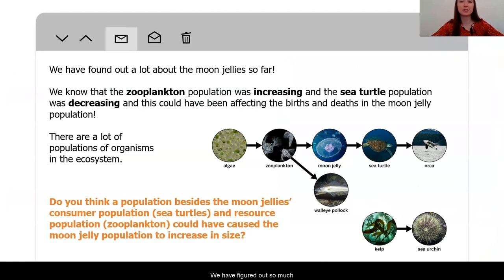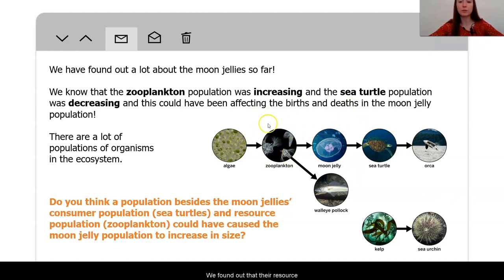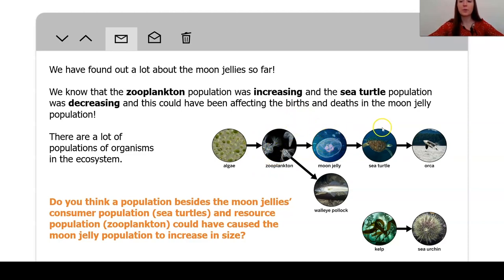We have figured out so much about the Moon Jelly population. In our previous lesson, we got to see some evidence from their resource and consumer population. We found out that their resource population, the zooplankton, was increasing around the same time as the Moon Jellies. This is so important because from our studies, we have figured out that the resource population can have a large effect on the number of births in the thing that consumes it. We also got to observe some evidence from the sea turtle population, and we found that it was decreasing about the same time that the Moon Jellies were increasing.